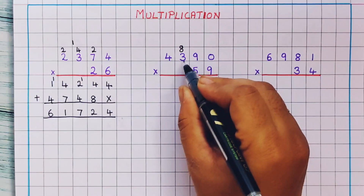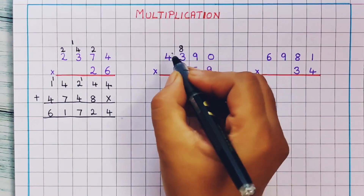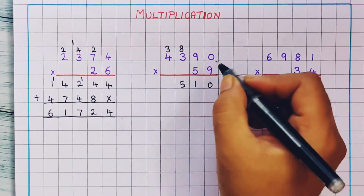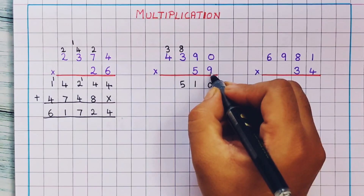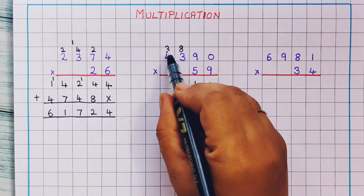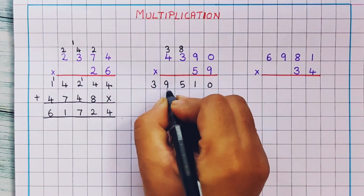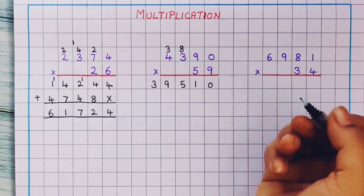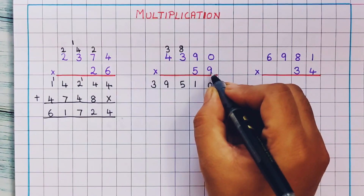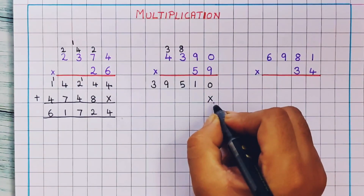9 3's are 27. 27 plus 8 is 35. So I will write here 3 and 5. Next, 9 4's are 36. 36 plus 3 is 39, so I will write here 3 and 9 — 39. Because the multiplication using this number is over, here I will put a cross mark. We will not be using this place.